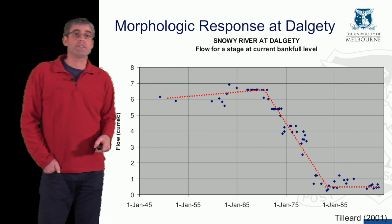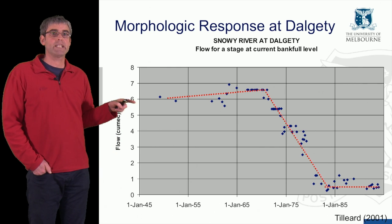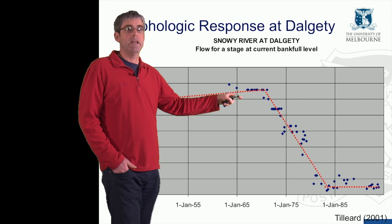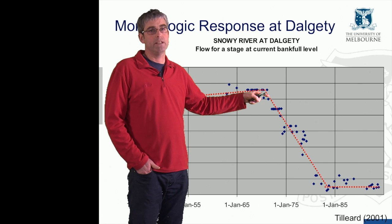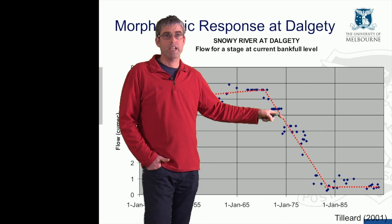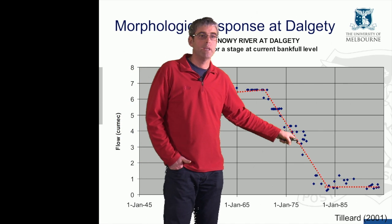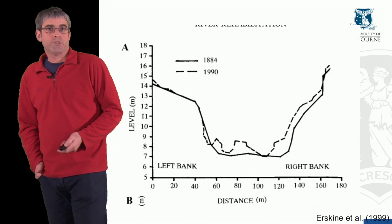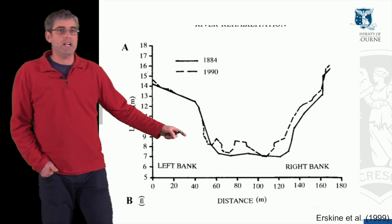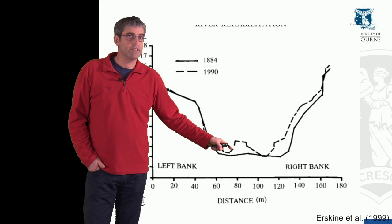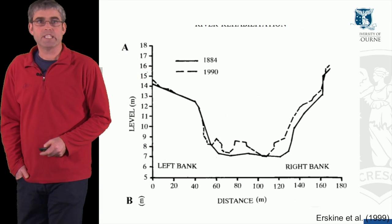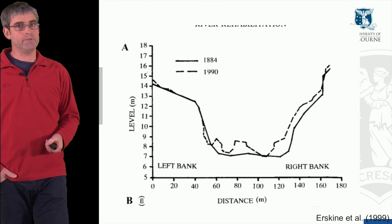And that's exactly what's happened. This plot shows the discharge carried by the channel at a particular stage — the current bankfull stage. After the Snowy Mountain Scheme was completed, we start to see channel contraction, and the discharge carried at that stage reduces through time down to a much lower level. We can also see this in cross-sectional surveys of the river. There are large deposits of sand and other sediments in the bed of the channel. The dashed line is from 1990, after the scheme was built; the solid line is from 1884, before the scheme was built.